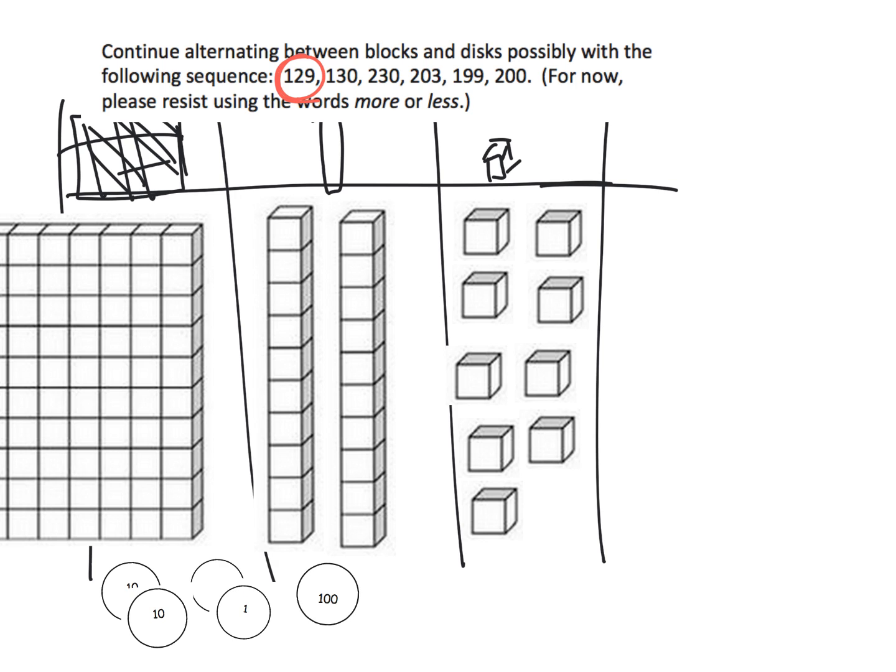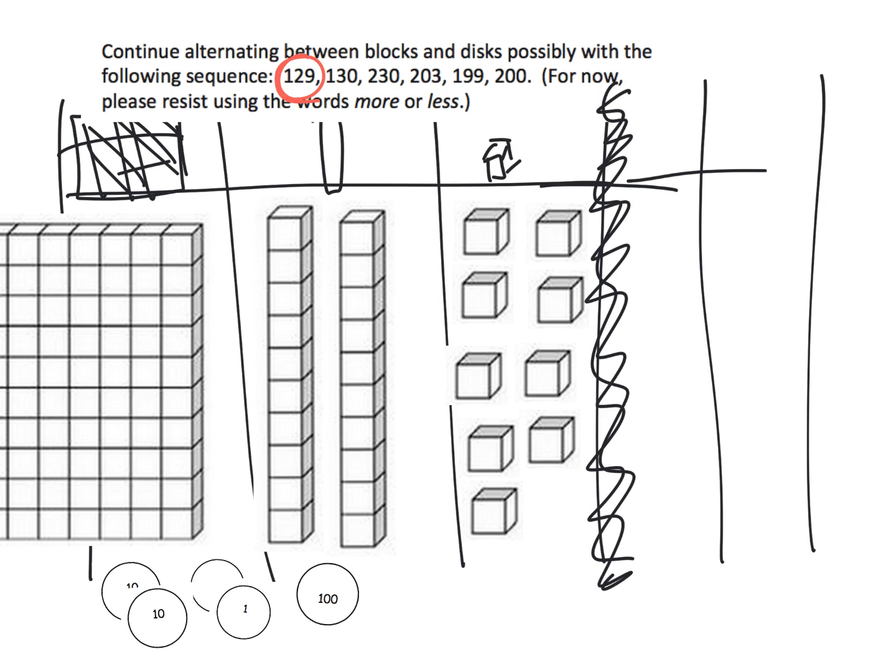Now, if I wanted to model using the place value disks, here's my ones, my tens, and my hundreds, and I wanted to model 129, that would look like I'd grab a hundred and I'd put a hundred right here in the hundreds column. I'd put a couple of tens in the tens column. There's my 20. And then for nine, I would need nine ones.